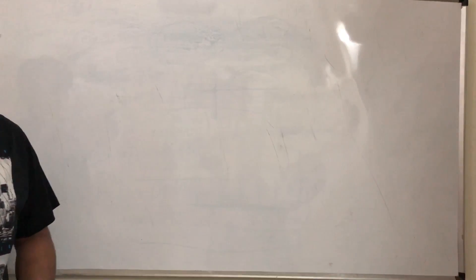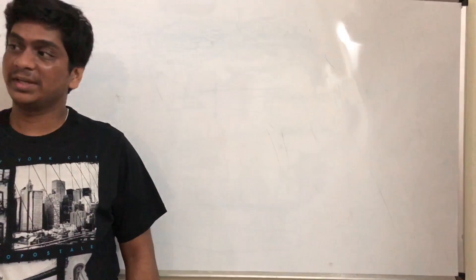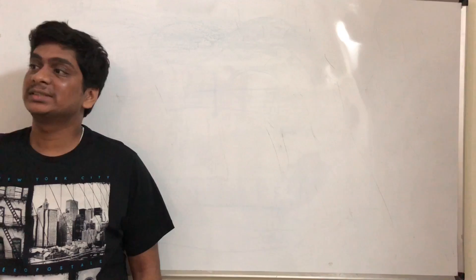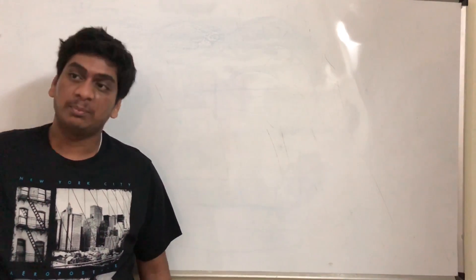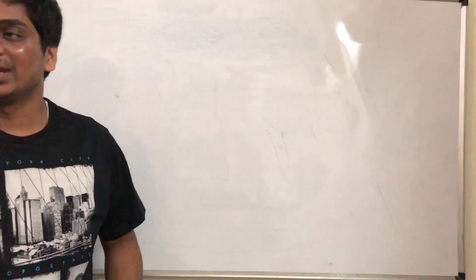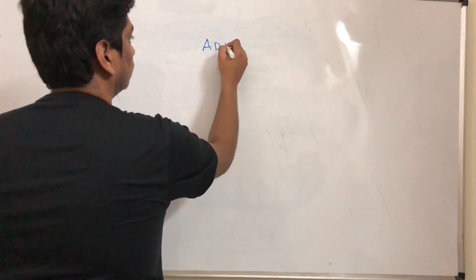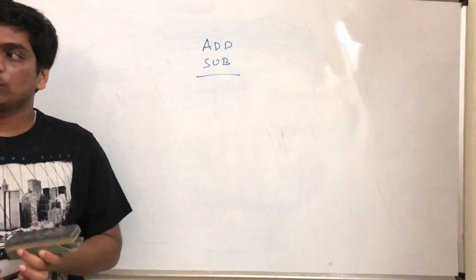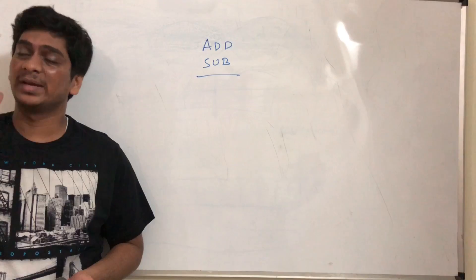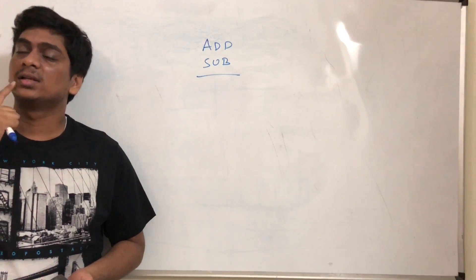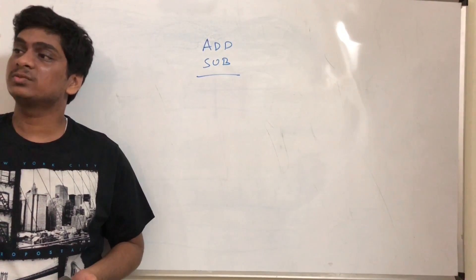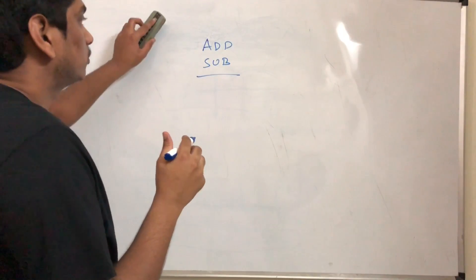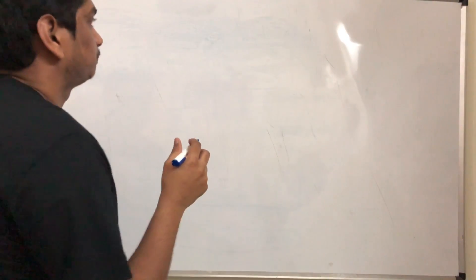Operations on binary numbers are very important. The basic operations you need to know in binary arithmetic are addition and subtraction. Addition is very simple — we'll take an example. Subtraction is where you need to add a little bit more thought, so starting with addition.